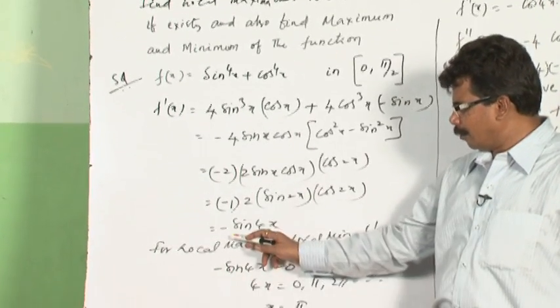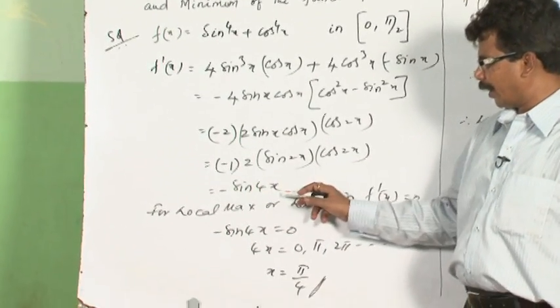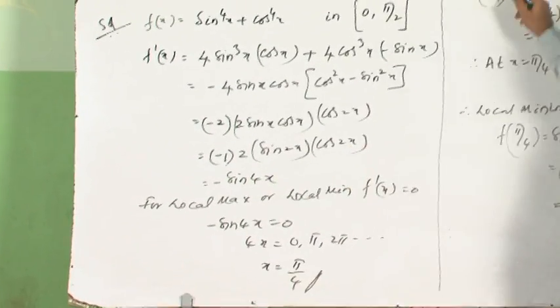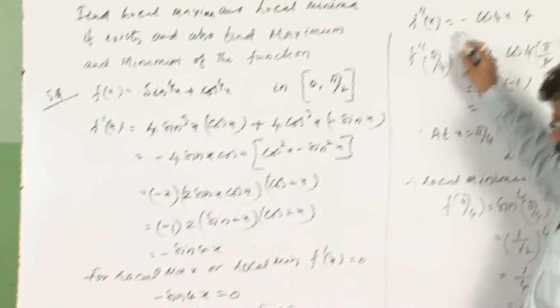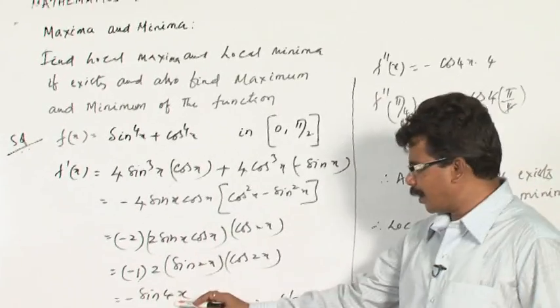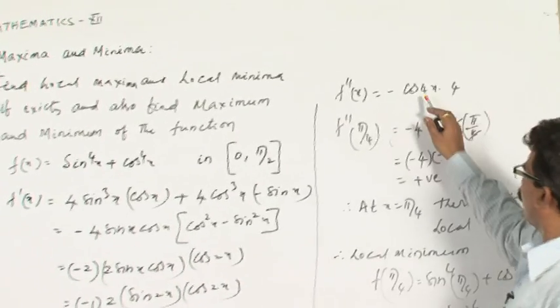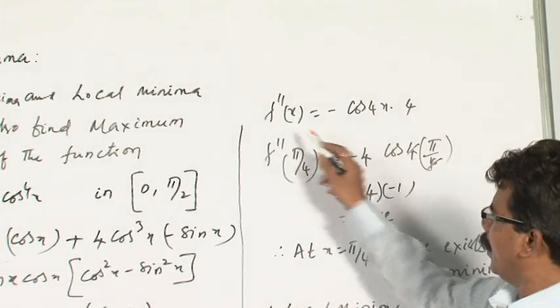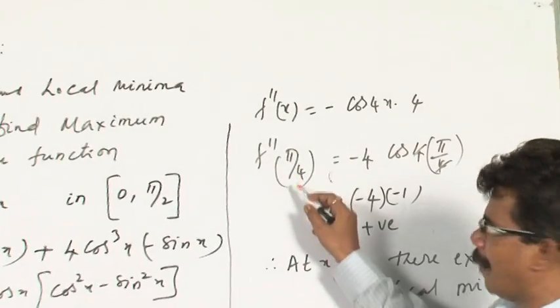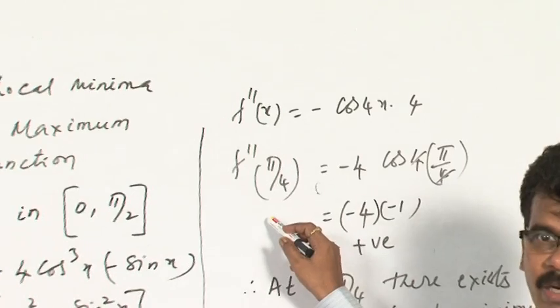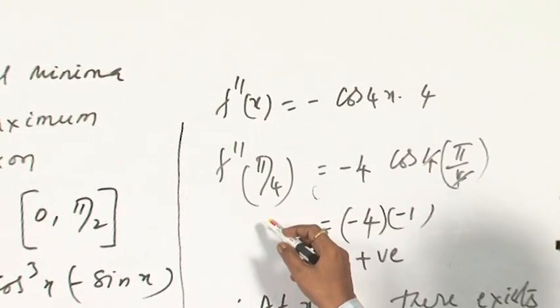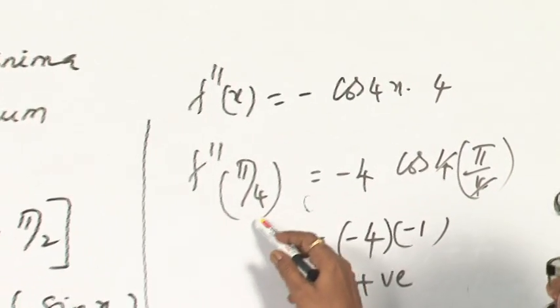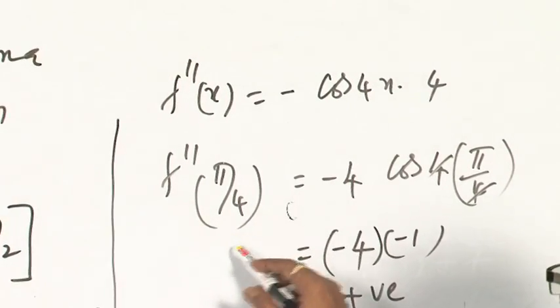If f'(x) is equal to minus sin 4x, then f''(x) is the derivative of minus sin 4x, which is cos 4x into 4. What is f''(π/4)? At the critical point, let us find out the second derivative test.